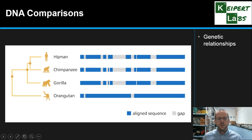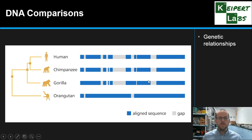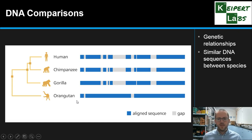Looking at the four organisms shown here — human, chimpanzee, gorilla, and orangutan — you can see that there are different sequences or parts in common between these different species, and there are also gaps or differences. You can trace the family tree and see that humans and chimpanzees, for example, have the most in common of these four organisms. Between species there can be very similar DNA sequences, and we have a surprising amount in common with a range of different species, suggesting a common ancestor at some point in the past.